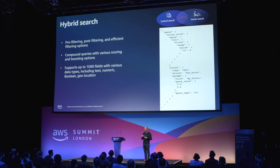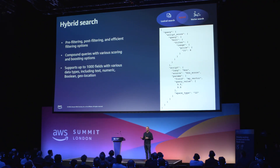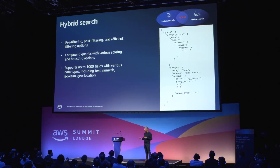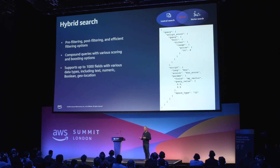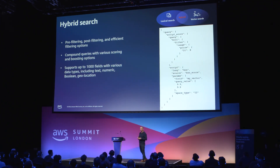It enables you to do pre-filtering. For example, in the case of hotel descriptions, maybe you want to pre-filter by price or by availability, or some other criteria. And what this enables you to do is support up to a thousand fields in the case of OpenSearch Serverless, to really fine-tune your query and the accuracy of the results that you bring back to your team.